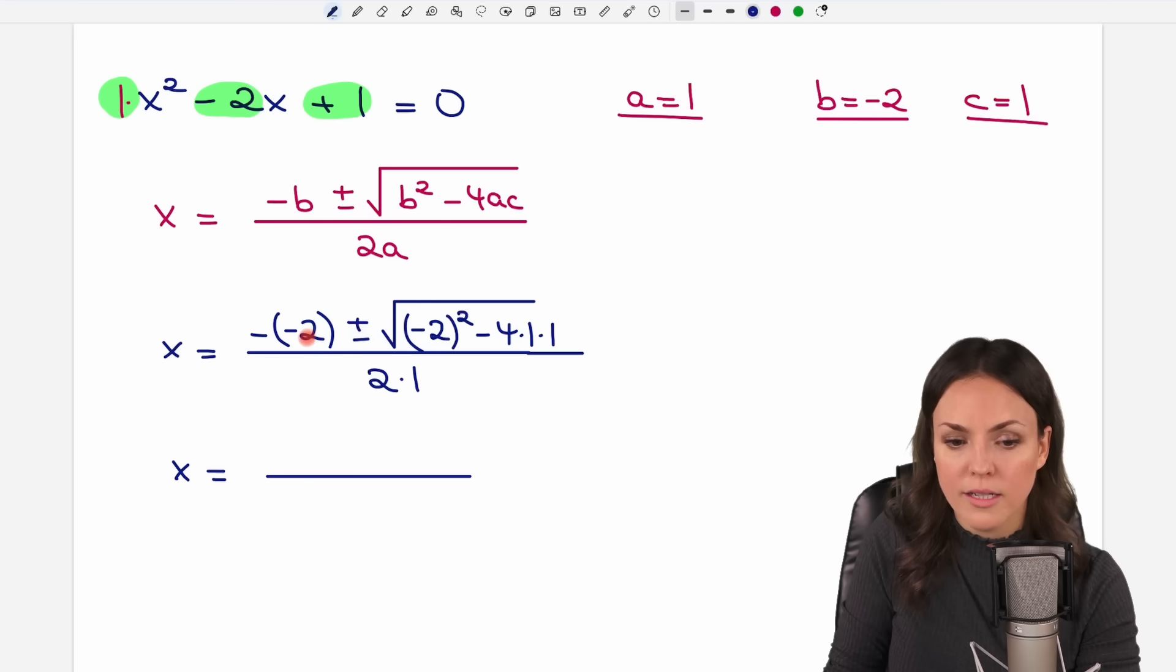Negative times negative gets positive. So we have a positive 2 here plus minus the square root of negative 2 squared equals 4. We subtract 4. 4 minus 4 equals 0.